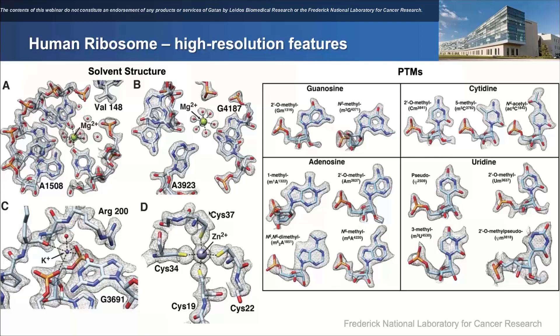I'll talk a bit later about potential ways to solve the ion assignment problem. Shown next to that is a zinc ion — coordinated between four cysteine side chains, those ones are pretty well characterized. Because it's the ribosome, you also have compositional heterogeneity with post-transcriptional modifications. As you go to higher organisms you get more PTMs — in the human ribosome there are over 200 post-transcriptional modifications. These are important for translational fidelity and speed.